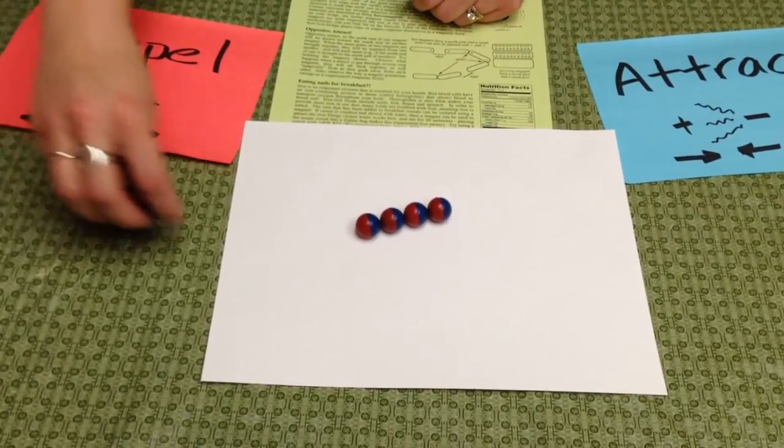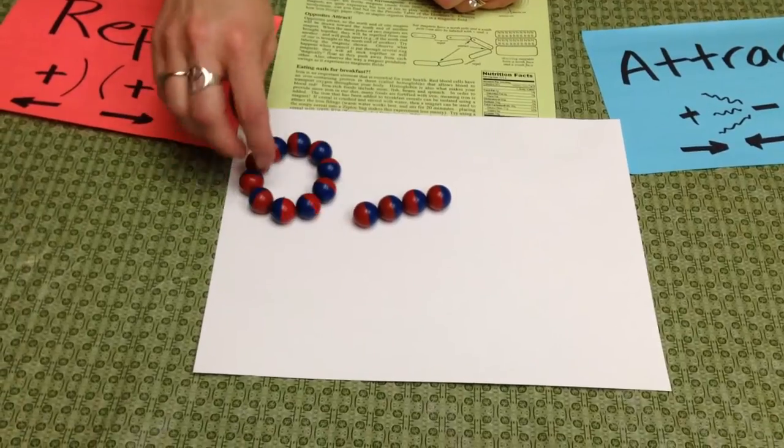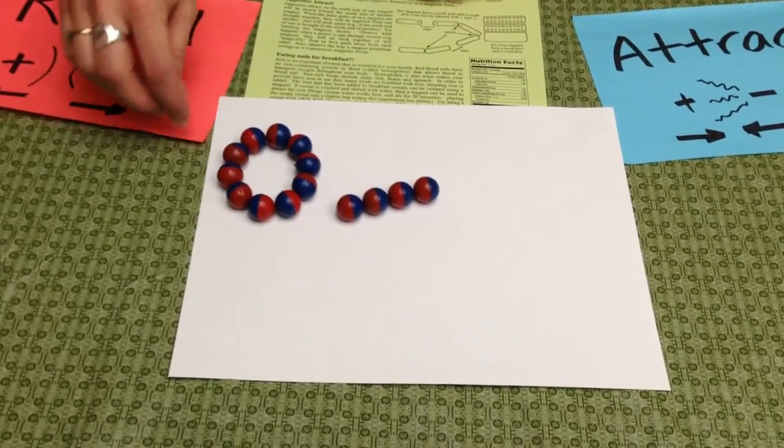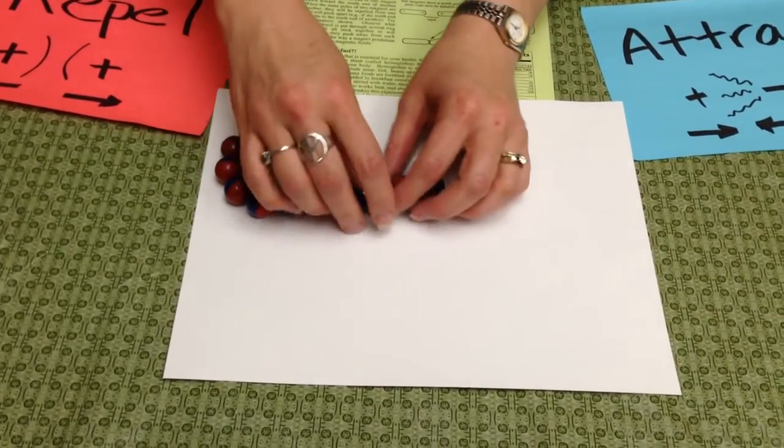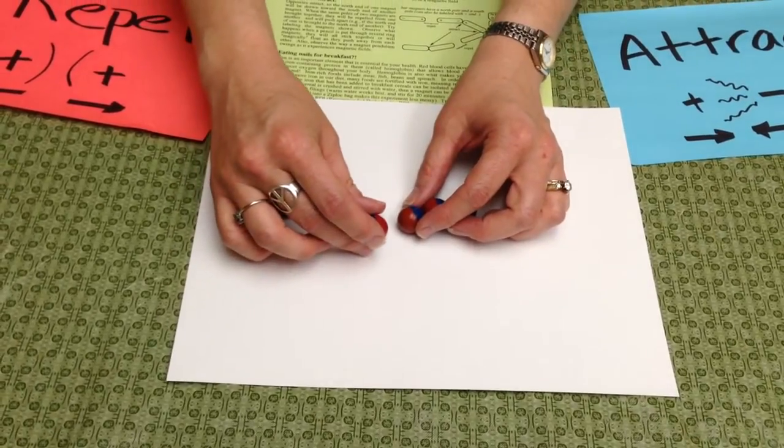The red ends align—the red is attracted to the blue and the blue is attracted to the red. If we try to bring the opposites together, then they repel.